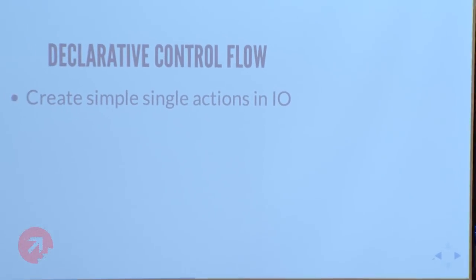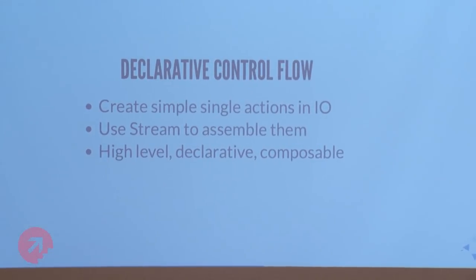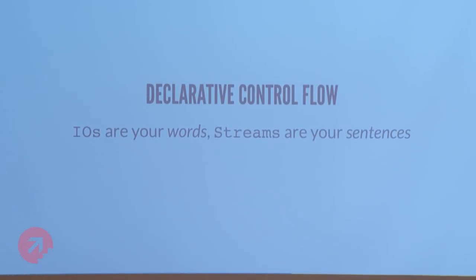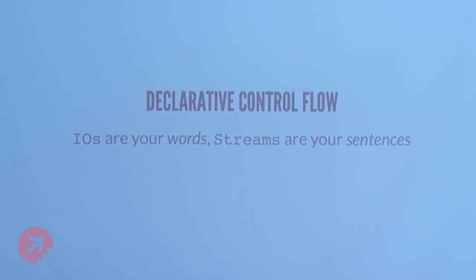So: declarative control flow. There was no streaming here — no big amount of data — but it was still very useful. The recipe is: create simple actions in IO, and use Stream to assemble them. This is high level, just like map and filter is more high level than a while loop. It's declarative, and composable, because everything is pure with no hidden interactions. The one thing I want you to take away: IOs are your words, and streams are your sentences. You can build things by manipulating at the word level — that would be for-comprehensions on IO — but operating on a whole sentence is much more expressive.